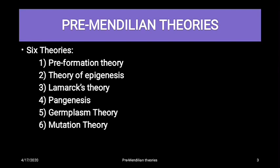The six pre-Mendelian theories are: number one, pre-formation theory; number two, theory of epigenesis; number three, Lamarck's theory; number four, pangenesis; number five, germplasm theory; and number six, mutation theory.